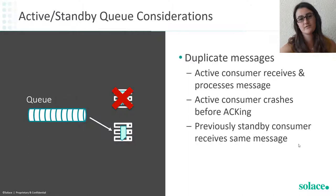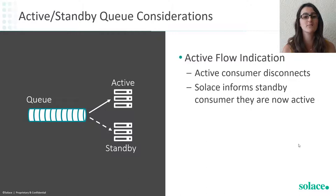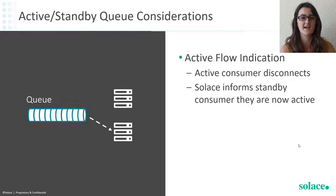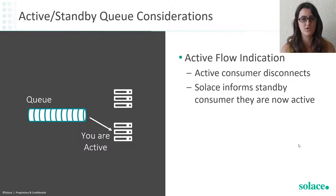The next consideration for active standby queues is the active flow indication. This is for when your active consumer disconnects and you want your previously standby consumer to be informed that they are now active. So here, when our active consumer disconnects, the standby instance is informed that it is now active. This is something you can enable when using the Solace enterprise APIs. Those are the main considerations when using an active standby, or exclusive, queue with Solace.